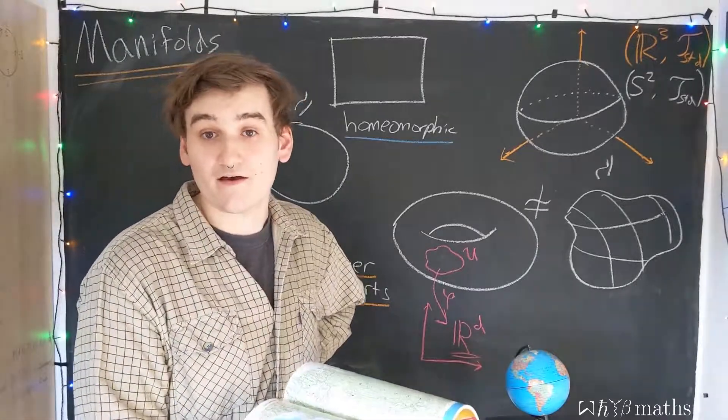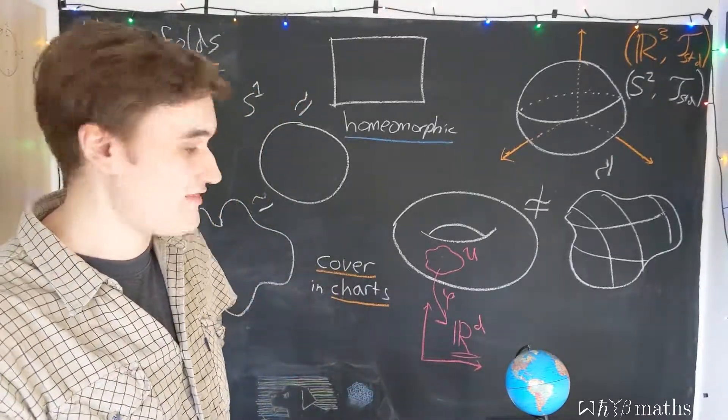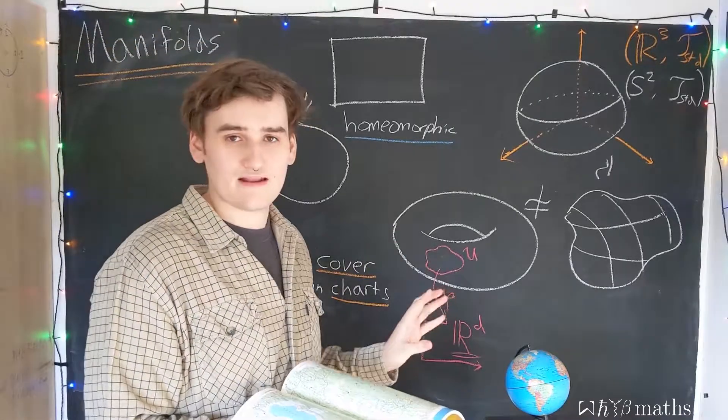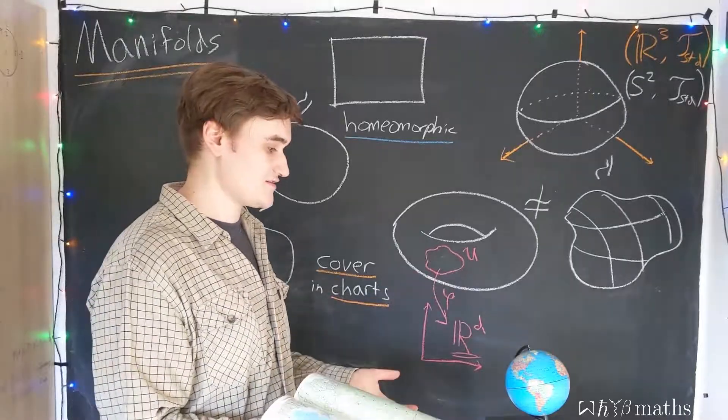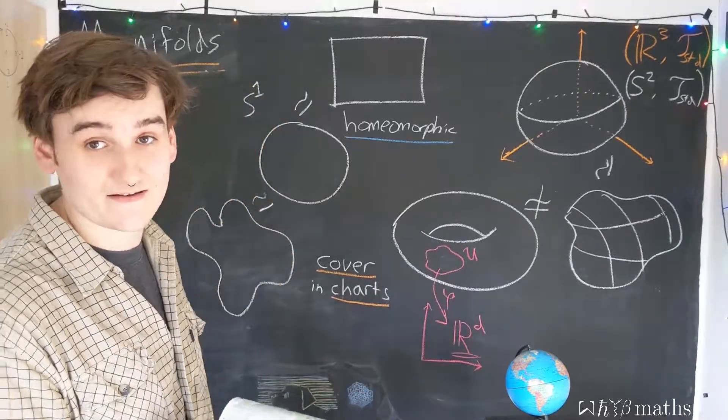So, if you ever meet a flat earther, all you need to do is explain that, whilst locally, the Earth appears to be homeomorphic to R2, globally, the structure is wildly different. It is, in fact, a sphere.